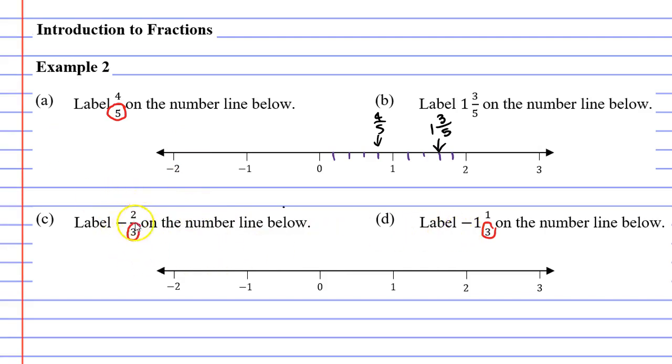So negative 2 thirds is going to be between the 0 and the negative 1. So because the denominator is 3, I'm going to draw two lines this time equally spaced apart between the 0 and the negative 1. Once again I only need two because the third one technically lands on the negative 1, so I don't need to draw the third line.